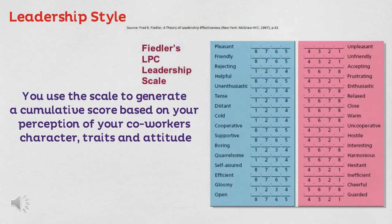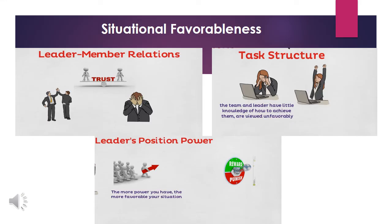Identifying leadership style is the first step in using this model. Fiedler believed that leadership style is fixed and can be measured using a scale he developed called the Least Preferred Co-Worker scale, also known as the LPC scale. You can use the scale to generate a cumulative score based on your perspective of your co-workers' characteristic traits and attitudes.